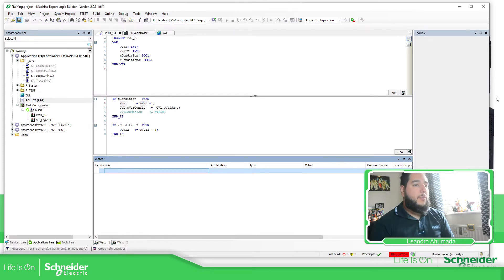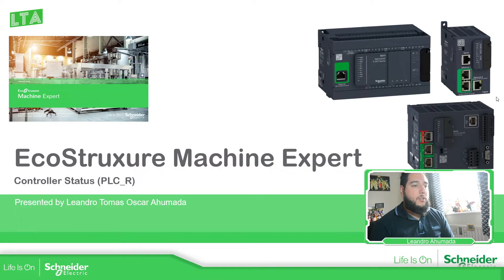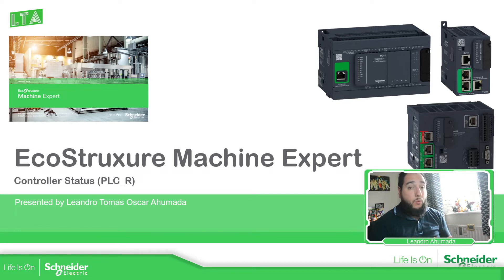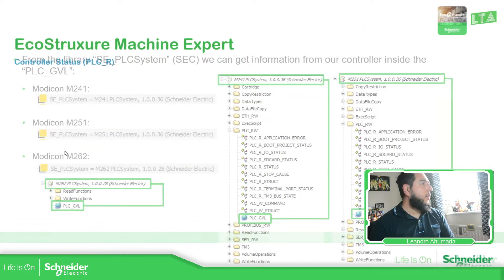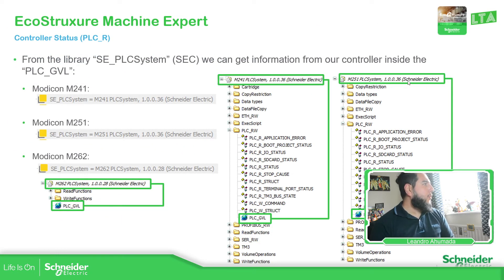So this is the software, not the presentation. Now it's the presentation. So in the controller — the M241, M251, and the M262, and other ones — we have an internal structure that gives us more information about the real status of the controller. As you can see over here, we have this library: SE underscore PLC system.